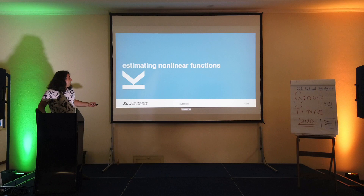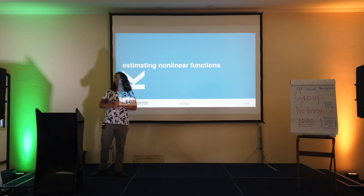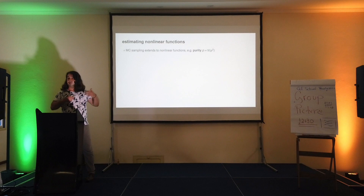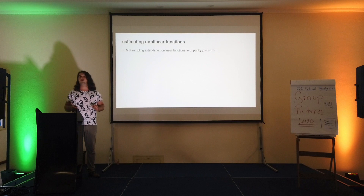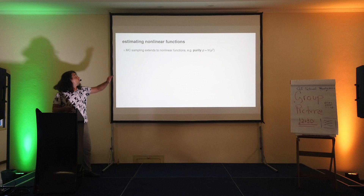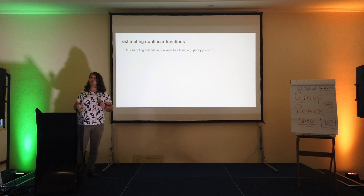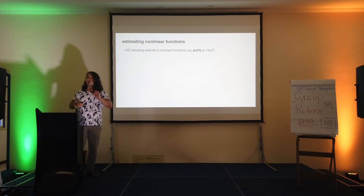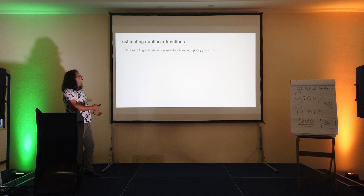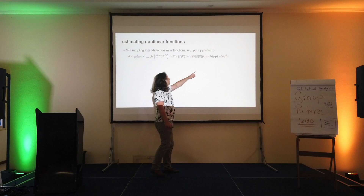So far we looked at predicting observables — linear functions of the density matrix. But the entire framework naturally extends to non-linear functions, most notably polynomials. One example is the purity of the density matrix: Tr(rho²). This is 1 for a pure state and 1/2^n for the maximally mixed state — clearly a non-linear function. How do we estimate this? I rewrite Tr(rho²) as Tr(rho × rho), then recognize this equals the trace of the expectation value of my Monte Carlo approximator times another independent expectation value.